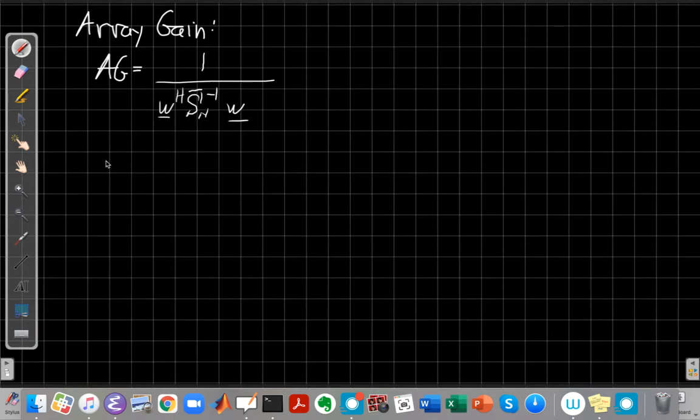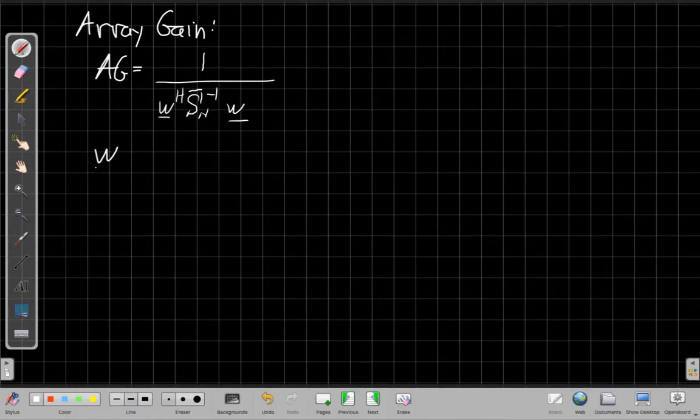And now for this one, we're going to do this for MBDR, so we have to remember now we have a different choice for the array weights. The array weights are now going to be alpha times SN inverse W.